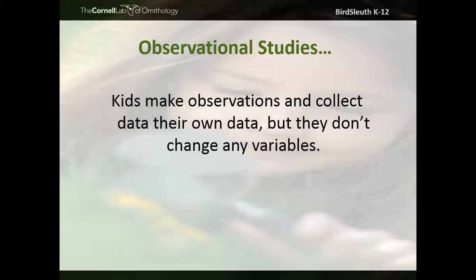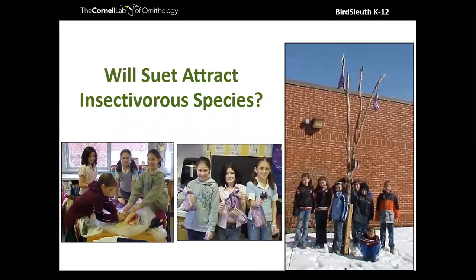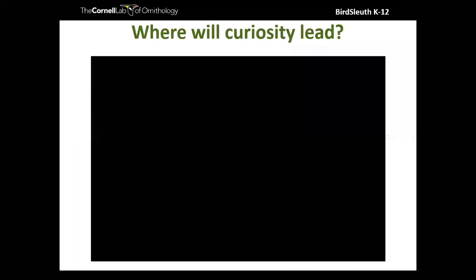Observational questions lead to observational studies, where students make observations and collect their own data without changing any variables. Even little kids can conduct studies. These second graders wondered if snow depth would affect the number of birds visiting their feeder. The best part of their observational study was that they didn't need to identify every bird - they just needed to measure snow depth and count birds visiting. Looking at their graph, the depth of snow didn't seem to affect the number of birds during this study. Another example: will suet attract insectivorous species? And one of my personal favorites: where will curiosity lead?